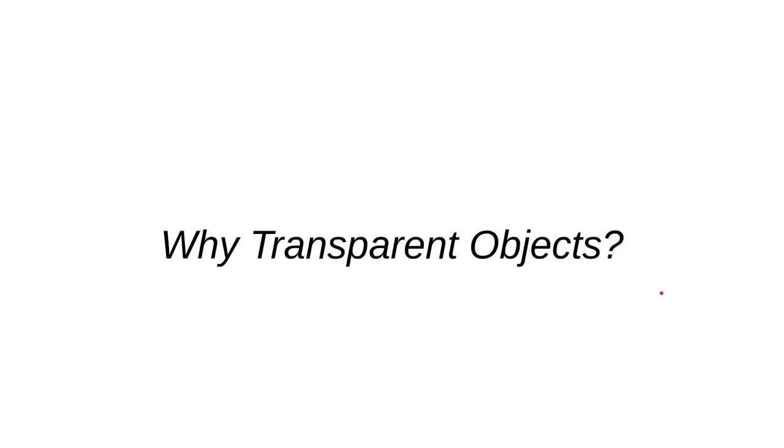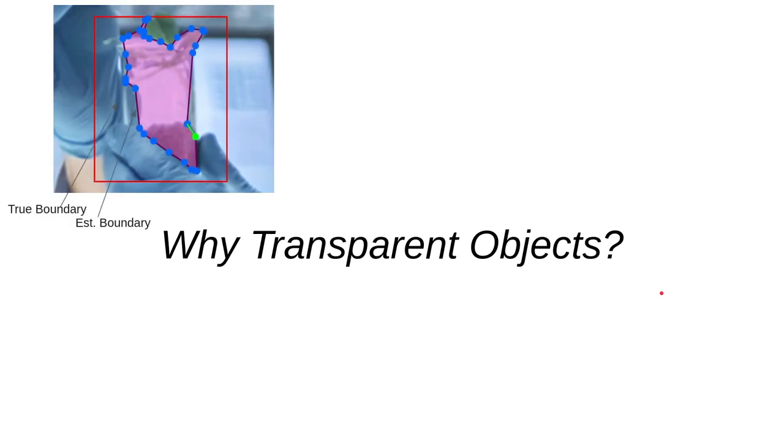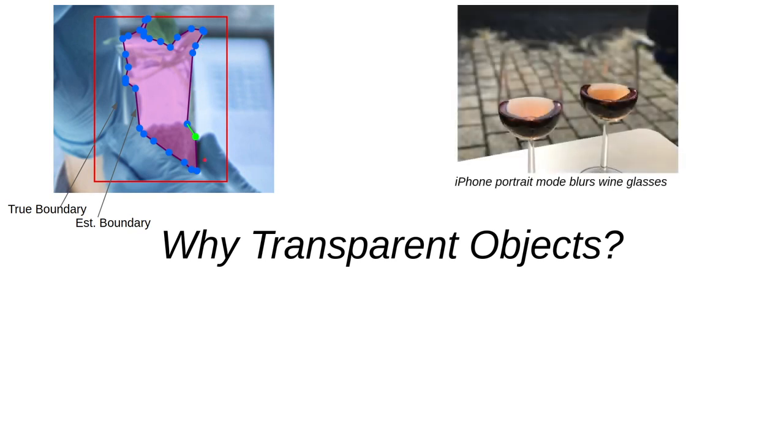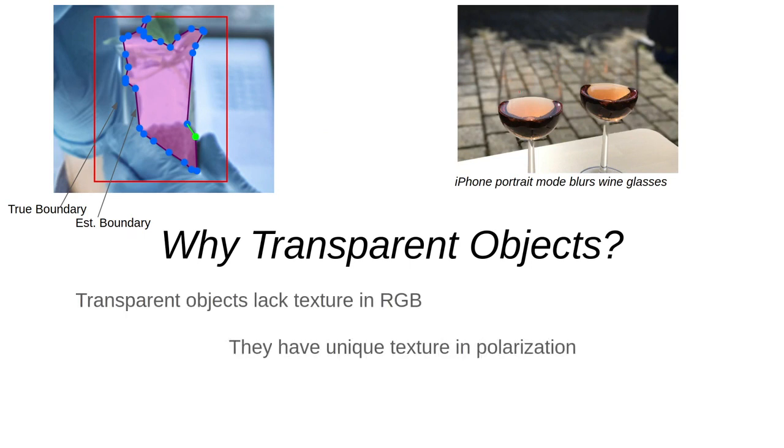But let's go back and talk about transparent objects for a second. See, transparent object segmentation is hard because you have this extra problem of the background texture. The background texture, like the glove in this case, creates confusing edges and causes algorithms to really struggle when segmenting objects. Another example of this is the background texture here tricks the iPhone portrait mode into doing a portrait of the wine instead of the wine glass. Basically, transparent objects lack texture in RGB, and they have a unique texture in polarization. So I guess you could say, transparent objects were the clear choice.